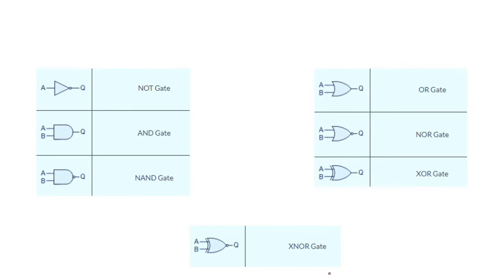We're going to see some logic gates, or logic devices, so let's get started. This is the NOT gate — this is the symbol of the NOT gate. We have a triangle with a small circle. This is the input and this is the output.